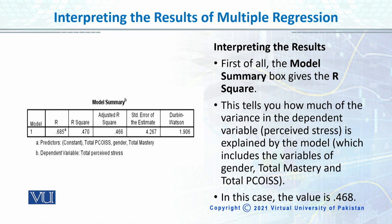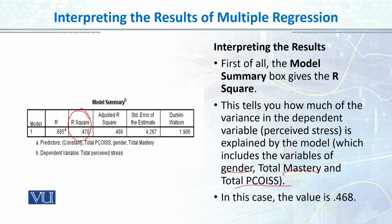In the model summary, the most important value is R-square, which is 0.47. R-square tells us how much percent of the variance we are explaining in our dependent variable. You can see that gender, total mastery, and total PCOIS — how much variance they are explaining in the dependent variable, which is perceived stress. The value is 0.468, rounded to 0.47.